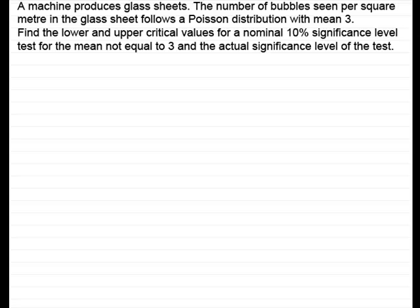Welcome to this example on hypothesis testing for the mean from a Poisson distribution. In this example, I want to show you what we call a two-tailed test. A machine produces glass sheets, and the number of bubbles seen per square meter follows a Poisson distribution with mean 3. Find the lower and upper critical values for a nominal 10% significance level test for the mean not equal to 3, and the actual significance level of the test.